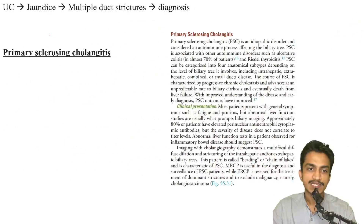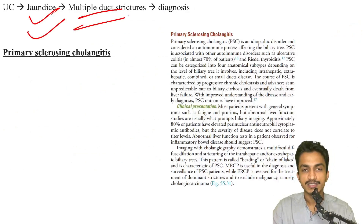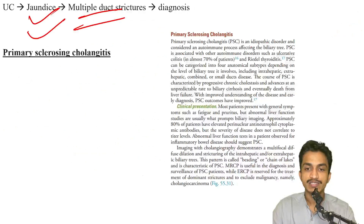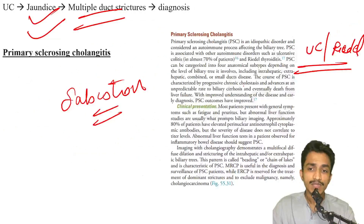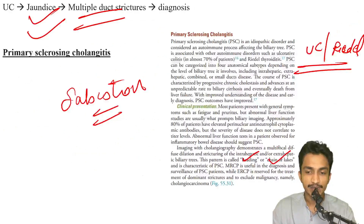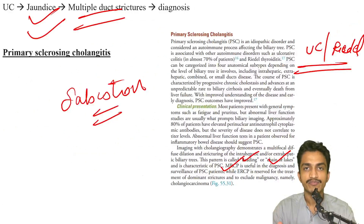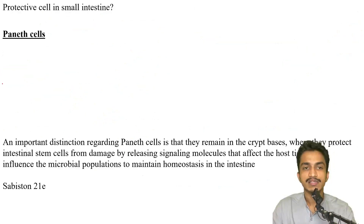Patient with ulcerative colitis presenting with jaundice and multiple duct strictures — this points towards primary sclerosing cholangitis (PSC). From Sabiston, PSC is associated with autoimmune diseases like UC and Riedel's thyroiditis. There is progressive cholestasis and on imaging a characteristic beading and chain-of-lakes appearance. MRCP shows characteristic multiple focal dilatations and strictures — this points towards PSC without doubt.